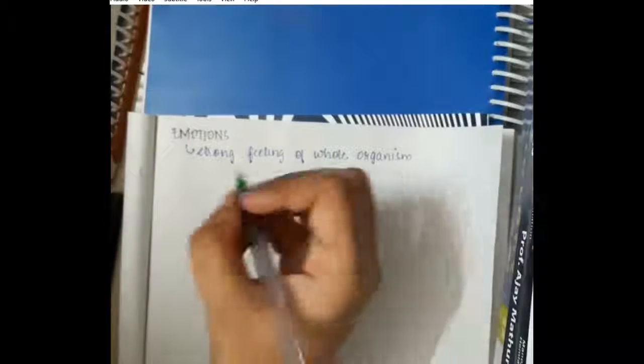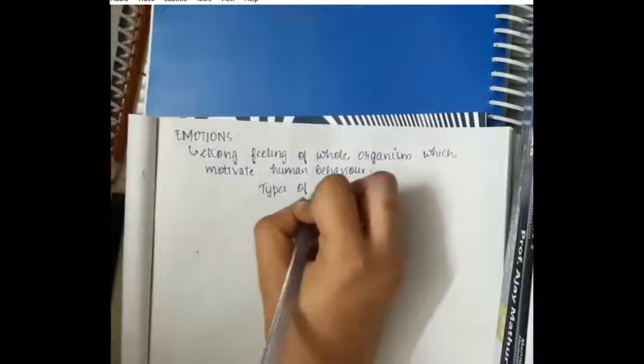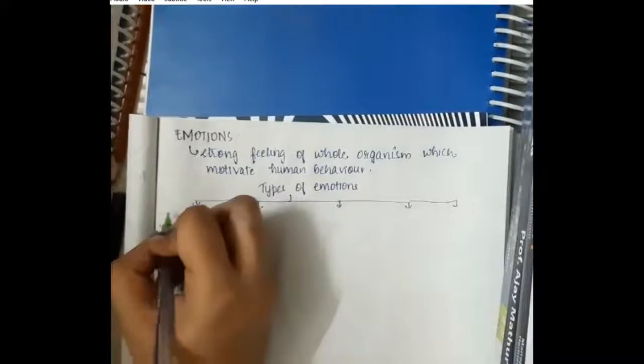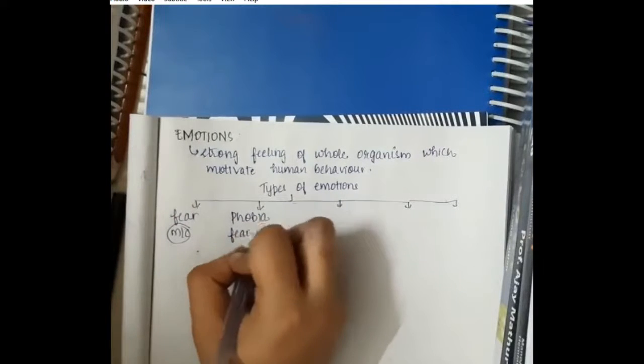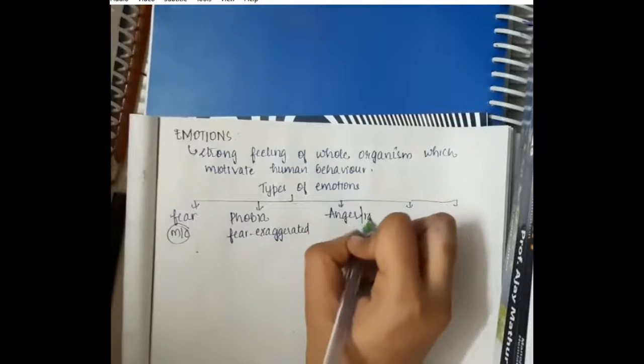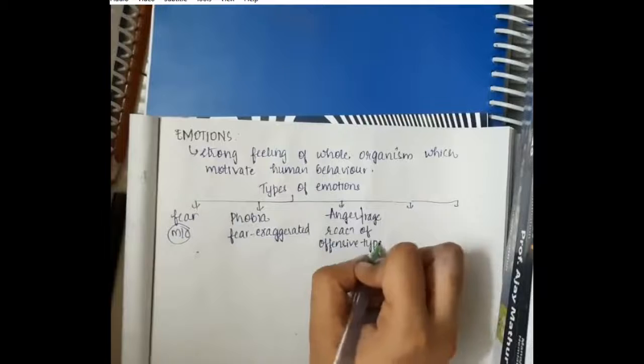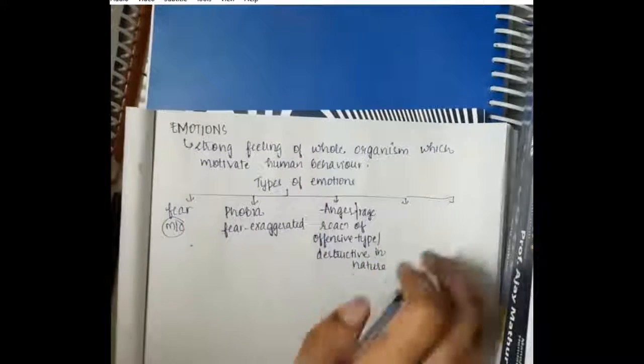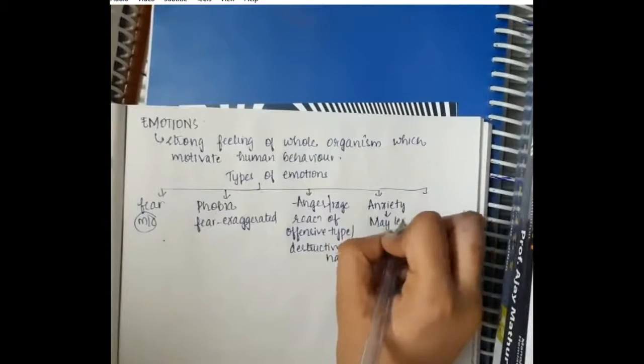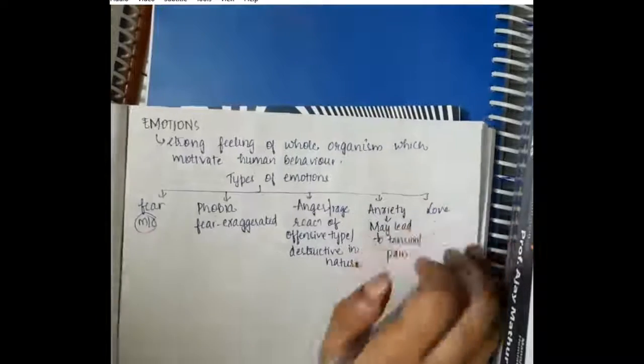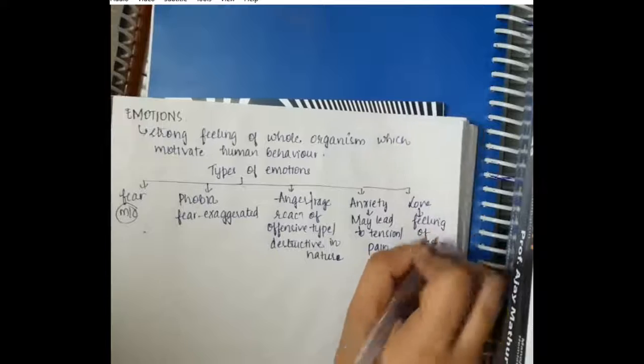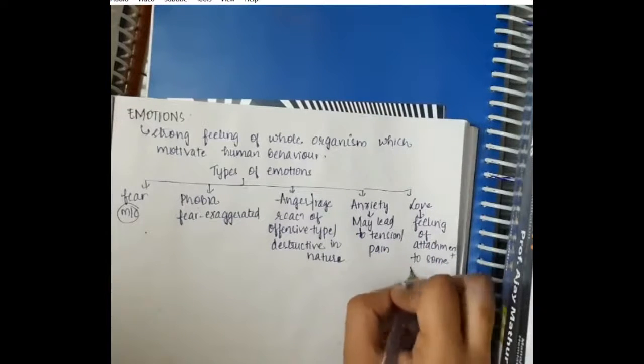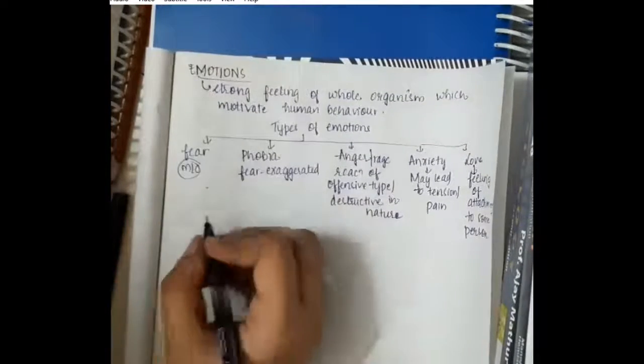Now emotions. Emotions are strong feelings of the whole organism which motivate human behavior. Types of emotions: the most common emotion is fear. Phobia is when fear is exaggerated. Anger is a rage reaction of offensive or destructive type. Anxiety is having tension or pain. Love is a feeling of attachment to some person.